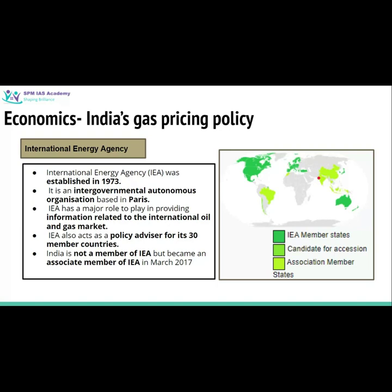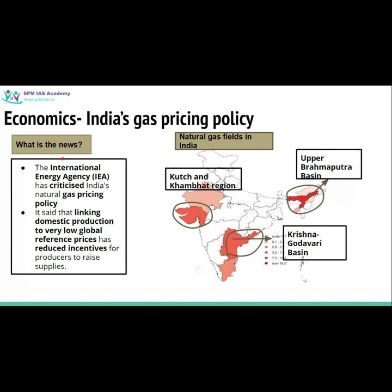The IEA's main objective is to promote crude oil and natural gas trade worldwide. This news article says that the International Energy Agency has criticized India's gas pricing policy. IEA has said that India's gas pricing policy fixes the price of gas at a very low level, and because of this, producers in India have no incentive to produce natural gas, which is why India's natural gas production is quite low.